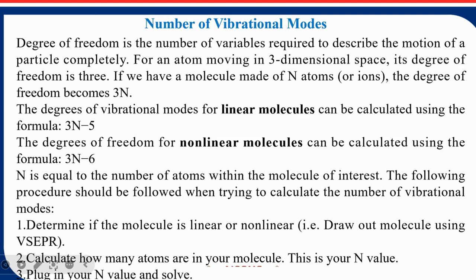The next major concept is how to calculate the number of vibrational modes. First, we must understand the degree of freedom — the number of variables required to describe the motion of a particle. For an atom moving in 3D, the degree of freedom is 3. So for a molecule made up of N atoms, the degree of freedom will be 3N.